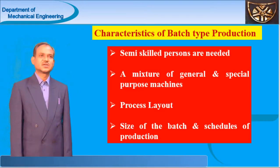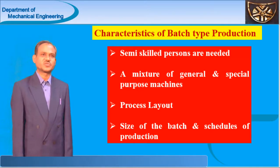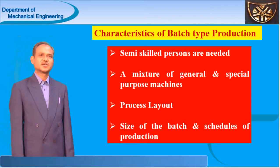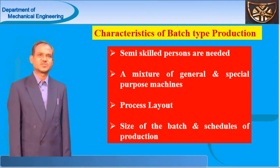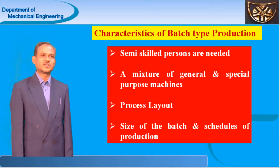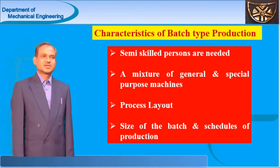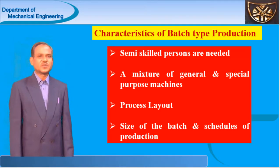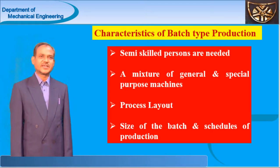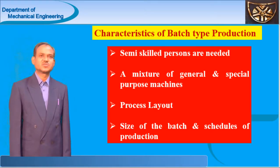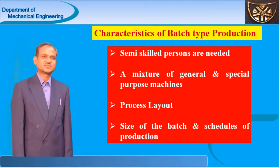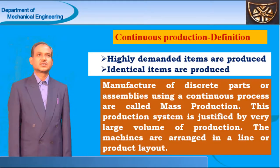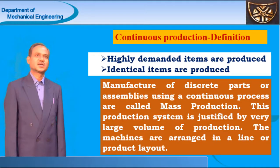Regarding manpower in batch production, very few skilled persons are enough but most persons are semi-skilled people; therefore we can save some money on manpower and minimize the cost spent on labor. Regarding machinery, it can be categorized into two categories: general purpose machines and special purpose machines. For batch production, a mixture — a combination of general purpose machines and some special purpose machines — is required. Most of the machines are general purpose with a few special purpose machines. Also, the size of batch — how much to produce — is an important parameter. As soon as one batch is completed, the same plant can be used to produce another batch of other products.